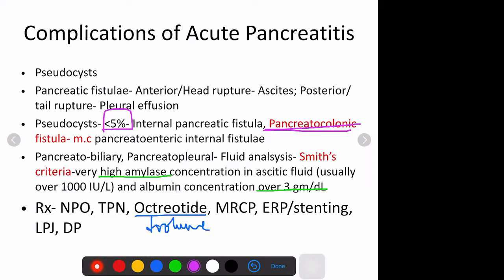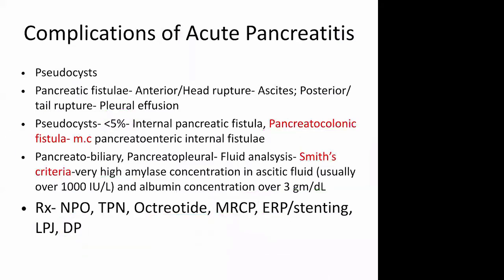How will you diagnose these pancreatic fistulas? You can do an MRCP, which is a non-invasive procedure. If you can see a definite communication in the head region, you can try stenting. For the tail region, you need an operative procedure - either a drainage procedure like a pancreaticojejunostomy if there is disease in the head and body, or if the duct is strictured with multiple intraductal calculi. If the disease is limited to the tail region, you do a resection - a distal pancreatectomy.